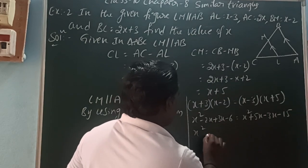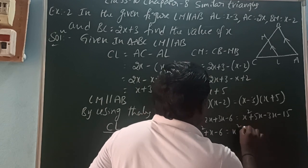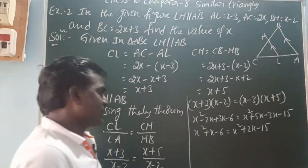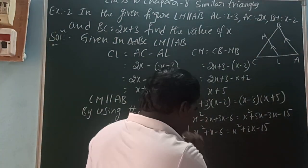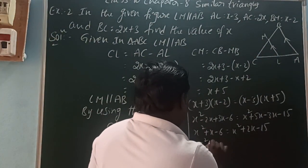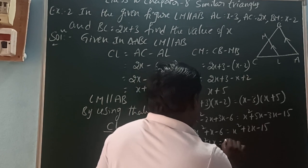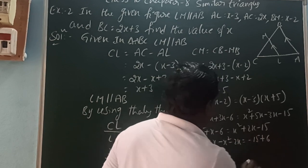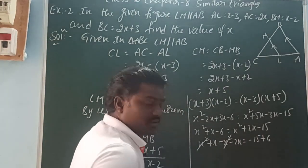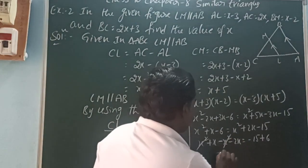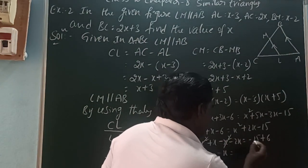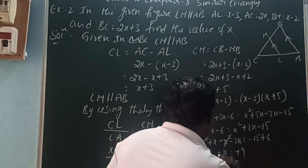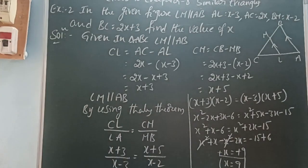So x squared plus x minus 6 equals x squared plus 2x minus 15. The x squared terms cancel. Bringing like terms together: x minus 2x equals minus 15 plus 6, so minus x equals minus 9, therefore x equals 9. The value of x is 9.